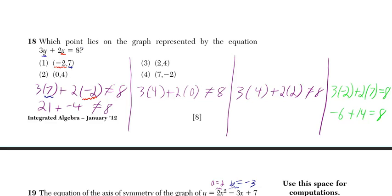We've got to make sure it comes out to 8 if it's going to be a point on that equation. Well, 21 minus 4 is not 8, so that one doesn't work, we've got to cross that out.